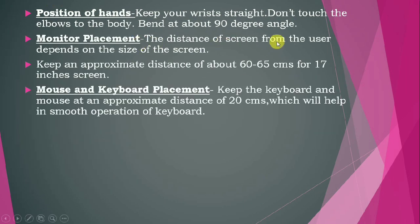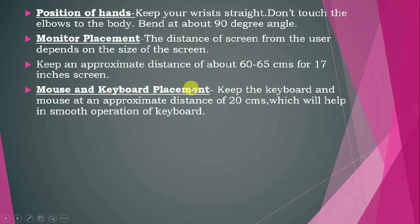For monitor placement, the distance of the screen from the user depends on the size of the screen, but generally you should have an approximate distance of 40 to 75 centimeters — for a 17-inch screen, 60 to 65 centimeters is recommended. For mouse and keyboard placement, keep the keyboard and mouse at an approximate distance of 20 centimeters, which will help in smooth operation and prevent their collision so you can work properly.